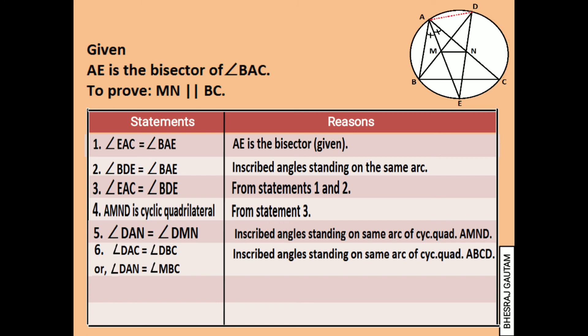Now left hand side of both statements 5 and 6 are equal. So we can now write angles on the right hand side are also equal. That is angle MBC is equal to angle DMN.